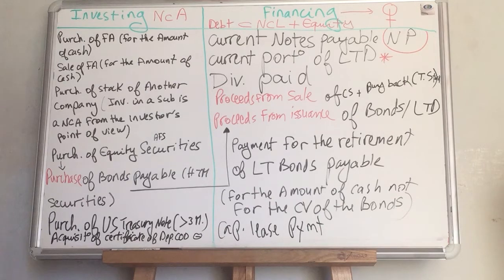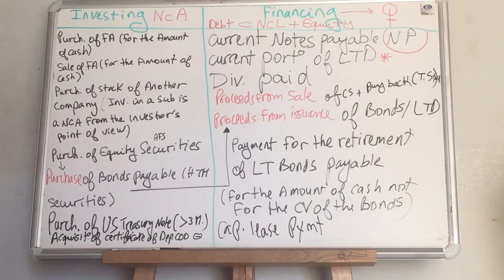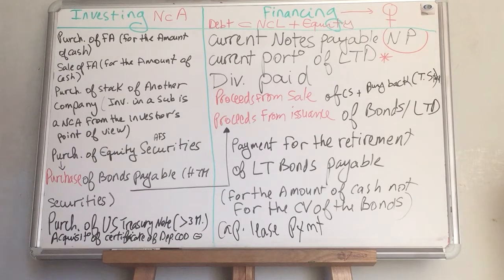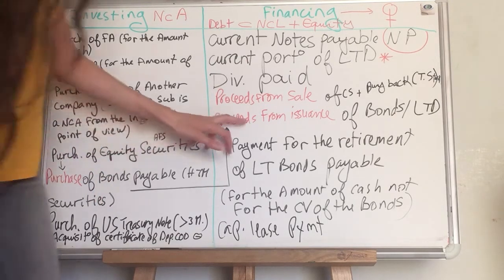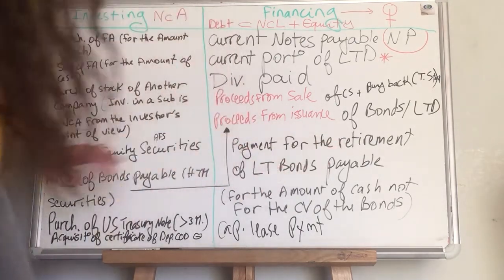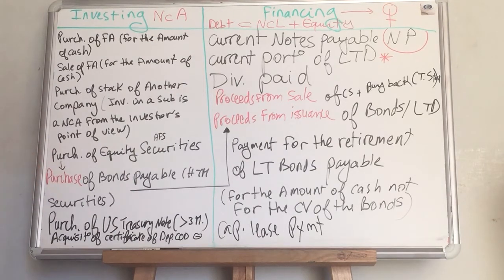What about the purchase of equity securities? It's in the investing section. Purchase of equity securities like available-for-sale securities. Now a very important point: purchase of bonds payable — we know that bonds payable can be held-to-maturity securities. When they tell you that they are purchasing bonds payable, this is reported in the investing section. It's not proceeds from issuance of bonds, it's not retirement of bonds — this is a purchase. It's incorrect to assume bonds payable always means the financing section.